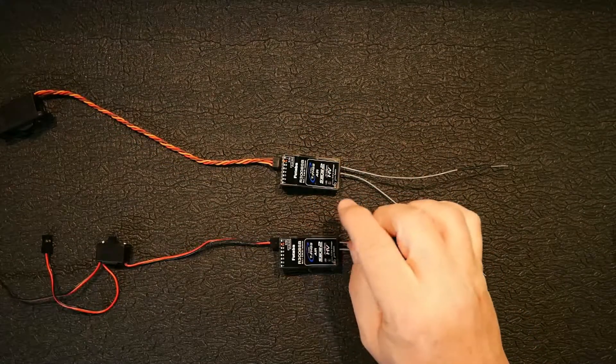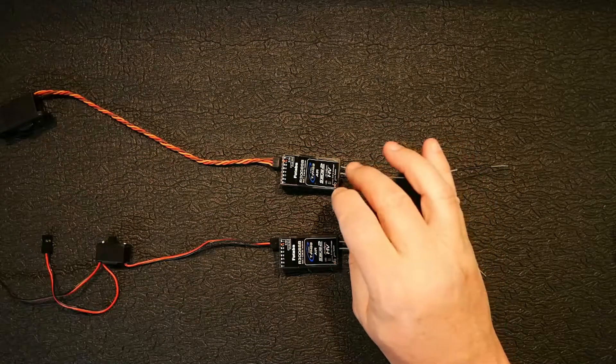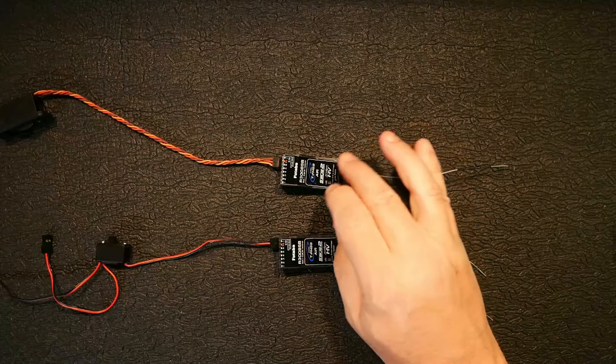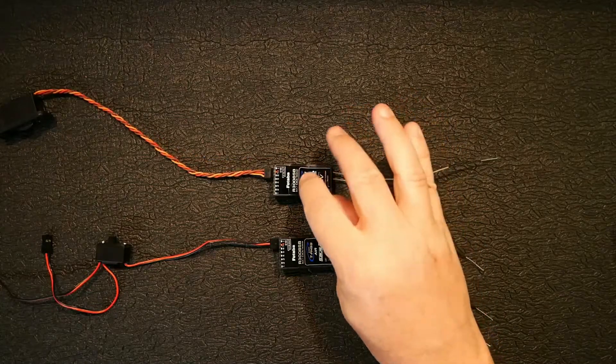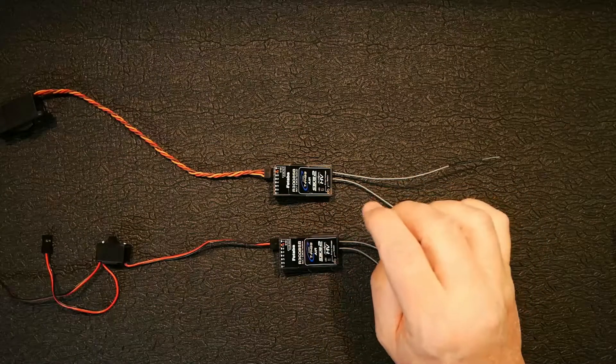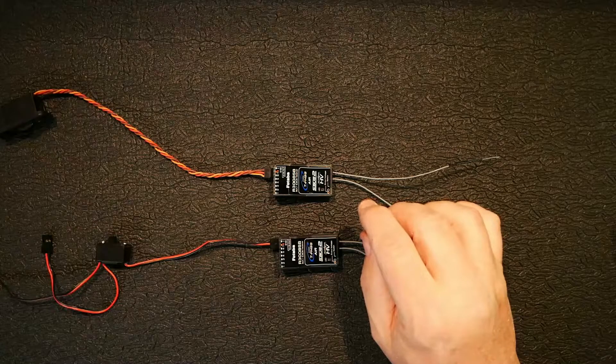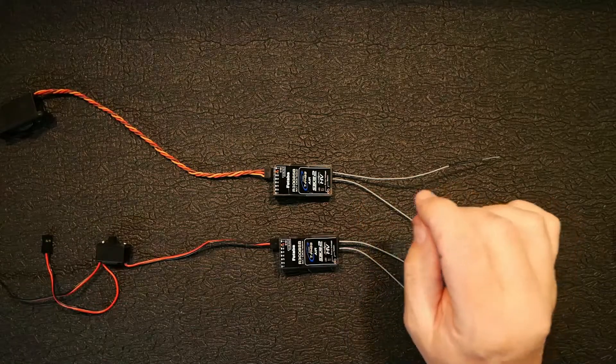Another popular reason why you would want two receivers on a Futaba like this is you can actually double your channel count. If you've got an 18 channel or a 32 channel or let's say you even got a 12 channel and these were two six channel receivers, you could double them up and turn it into 12 channels.